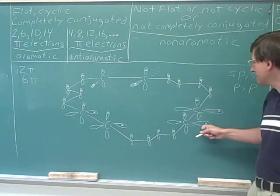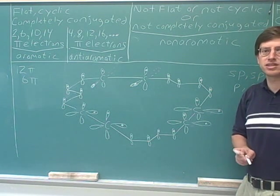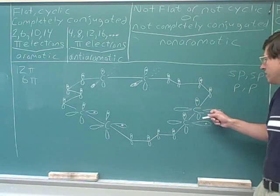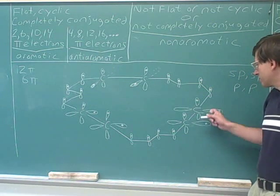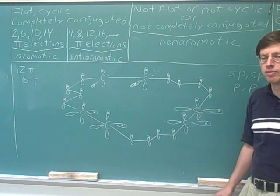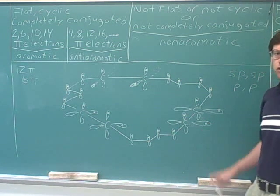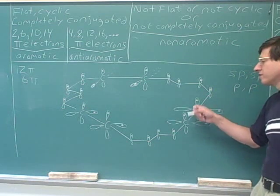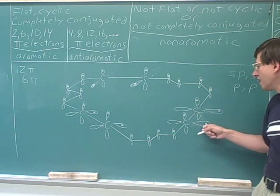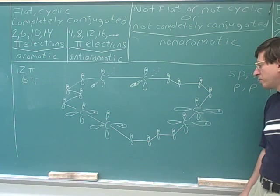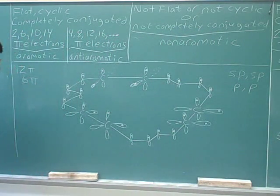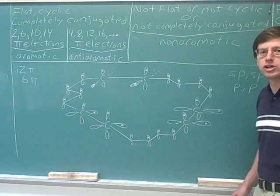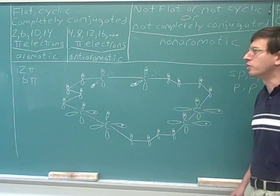The important thing to see is that these horizontal p orbitals are not part of the conjugated system. They can't overlap with the p orbitals at any of the other atoms in the ring, because all the other p orbitals in the ring are vertical. So we should not count these electrons as pi electrons — we should only count the electrons in the overlapping vertical p orbitals. There are six more pi electrons in the horizontal non-overlapping p orbitals, but we don't count those electrons.